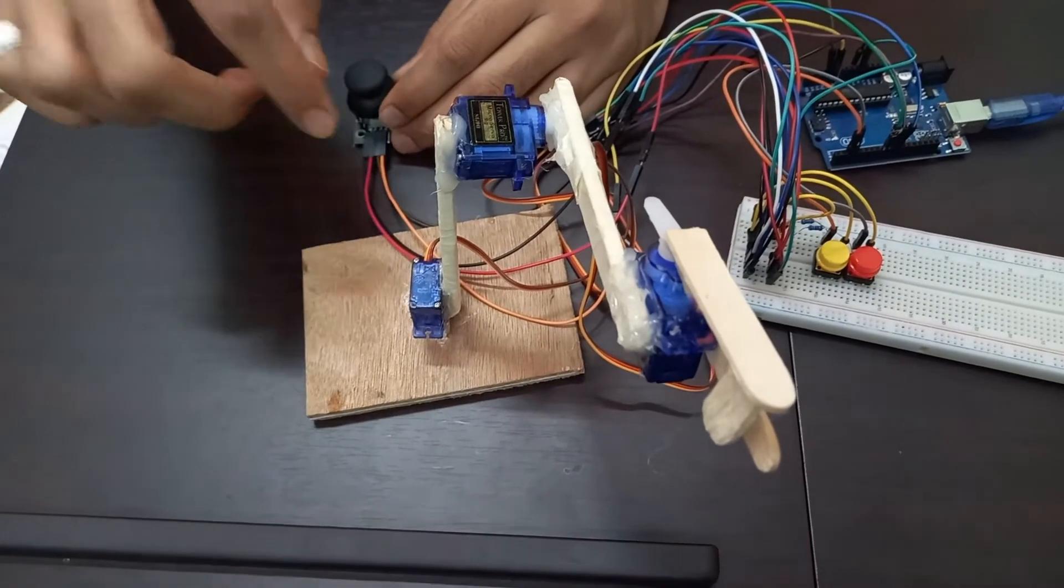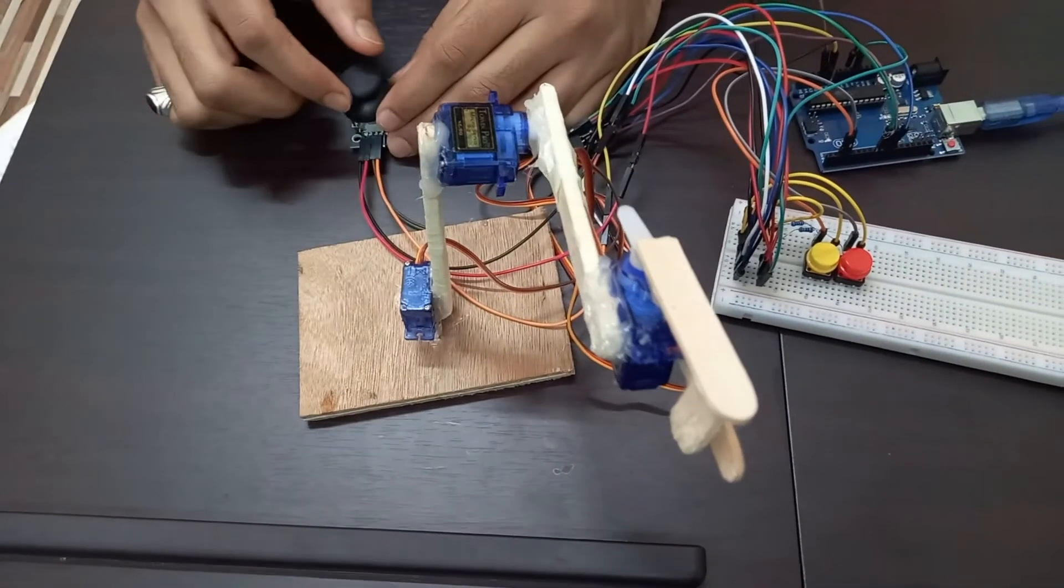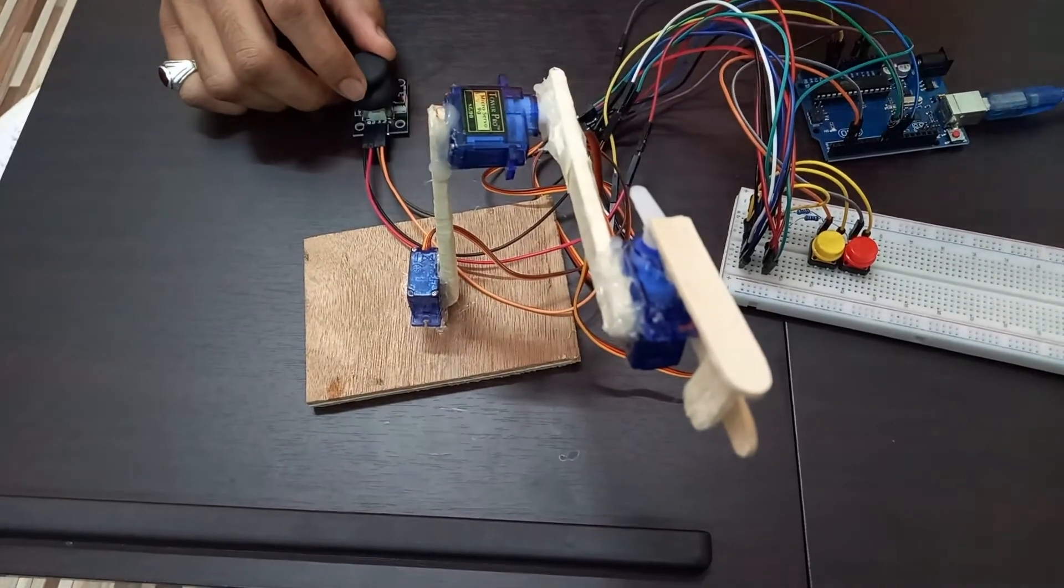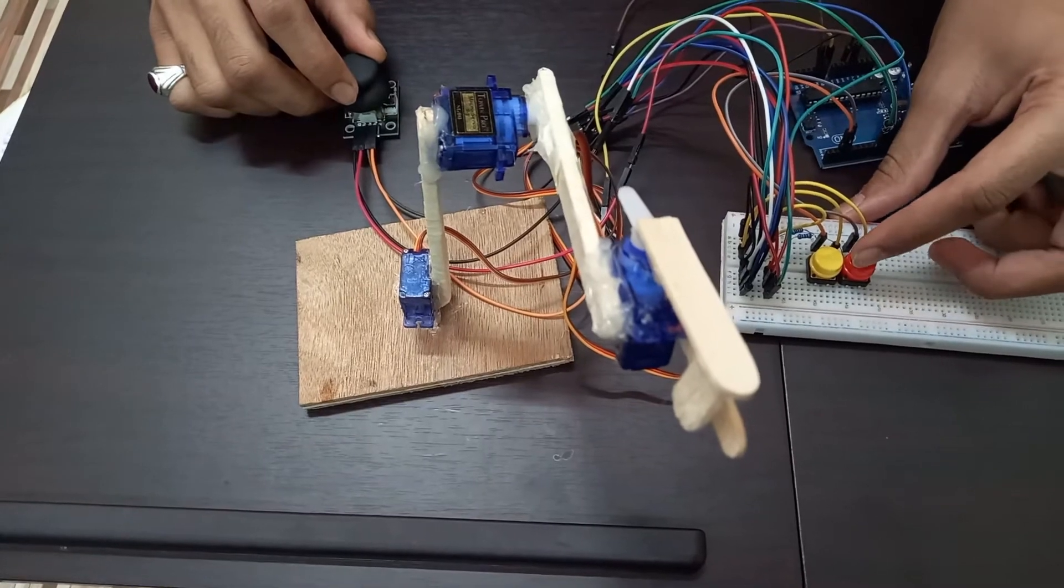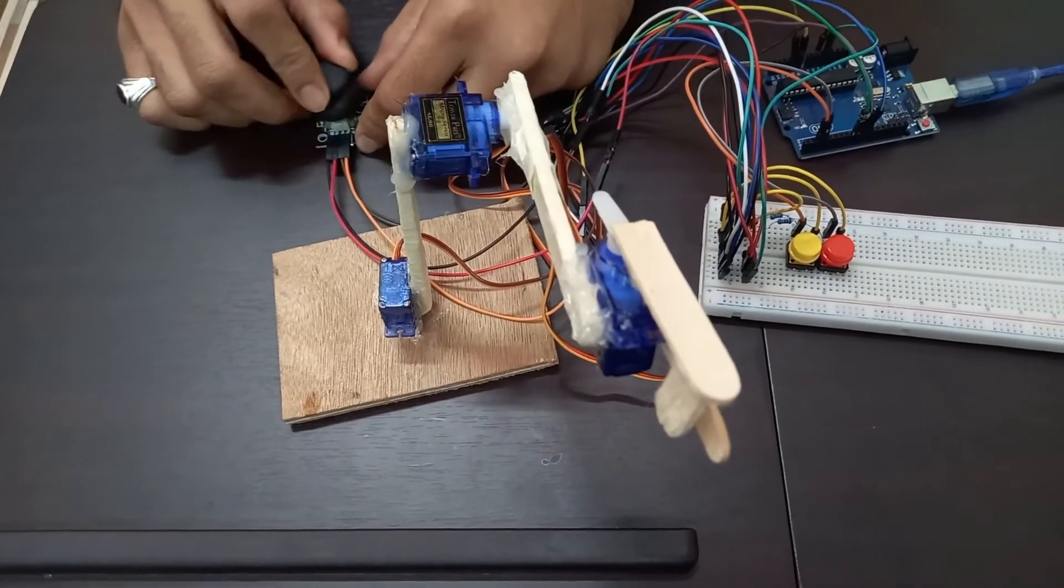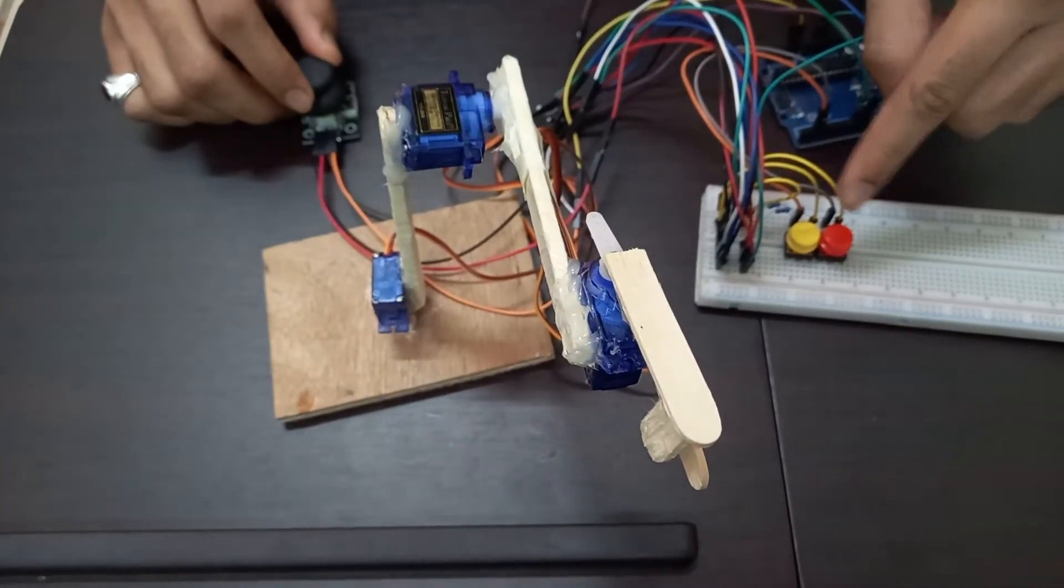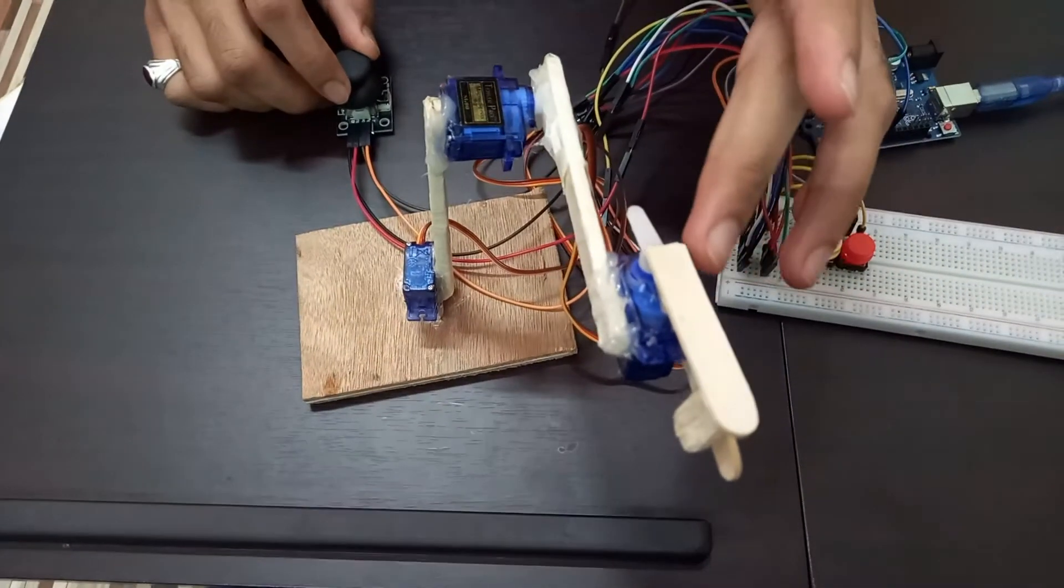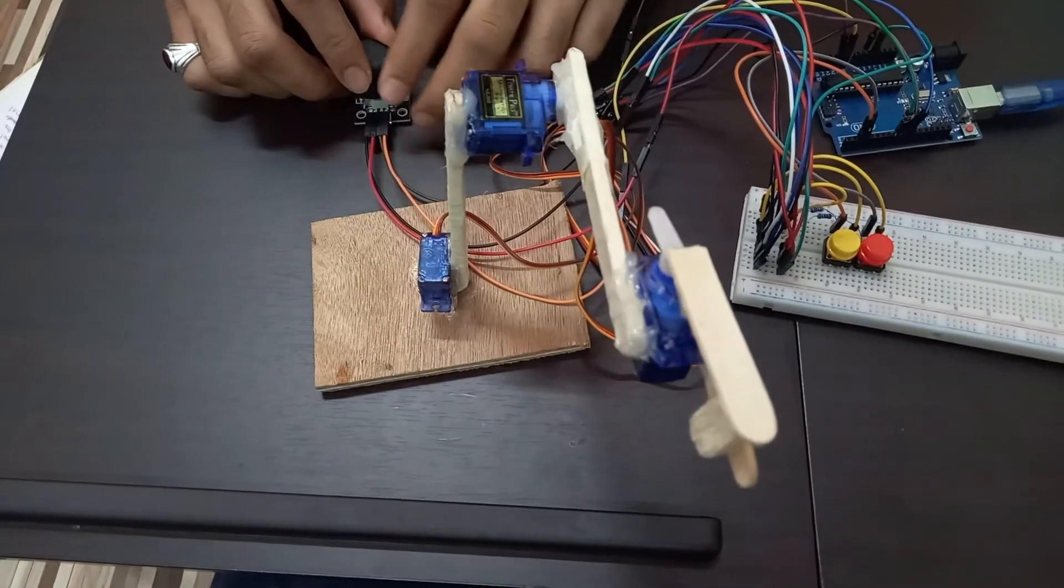As we are controlling on X axis base and wrist motor both, to control the switching of the control, we are making use of buttons. By pressing the red button, the switch of control on X axis will move from base to wrist, and by clicking the yellow button, the movement of control from wrist to the base will go.